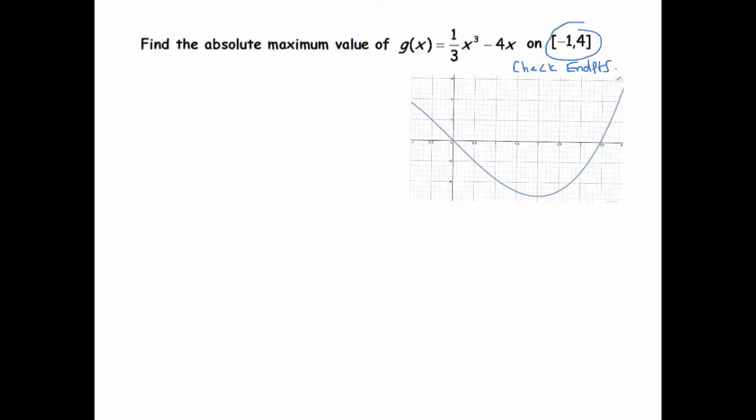Okay, so let's take the derivative of this function. g prime of x equals the derivative of 1 third x cubed is just x squared, and the derivative of minus 4x is minus 4. And so this can factor into x plus 2, x minus 2. And that's always defined, so I don't have a critical point where the function is undefined. And the derivative is defined on all the real numbers.